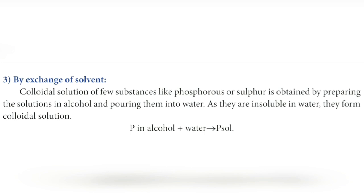We can also prepare colloidal solutions by exchange of solvent. In this method, a colloidal solution of substances like phosphorus or sulfur is obtained by first dissolving them in alcohol, then pouring the solution into water. As they are insoluble in water, they form a colloidal solution. That is how we prepare a colloidal solution by exchange of solvent — the true solution in alcohol converts itself into a colloidal solution when transferred into water. Hope you all enjoyed today's session; we will meet in another session.